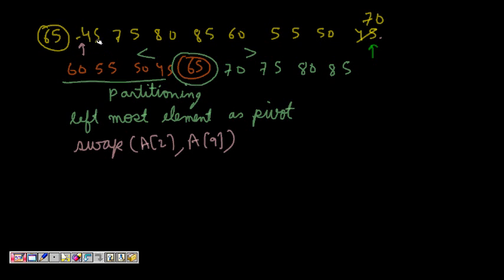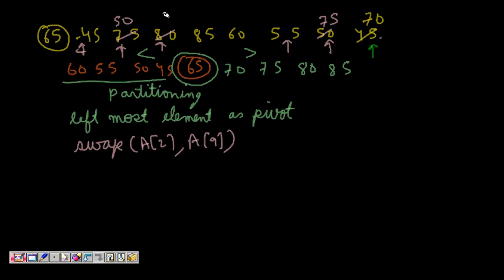Next, I increment the left pointer — it's less than 65, so I move again. Now 75 is greater than 65, so I stop. Moving from the right, 50 is less than 65, so I swap 75 and 50. Then I increment both pointers: 80 is greater than 65 and 55 is less than 65, so I swap them. Again, 85 is greater than 65 and 60 is less than 65, so I swap those too.